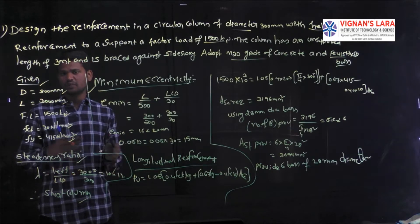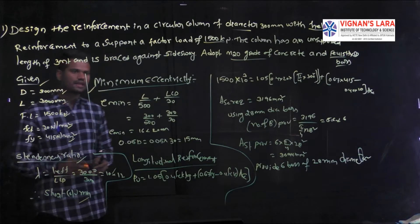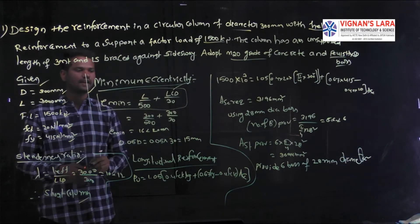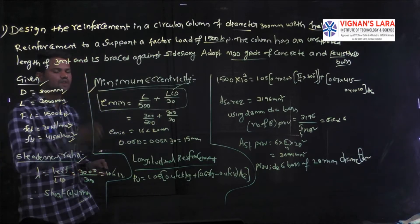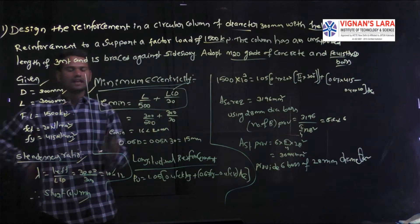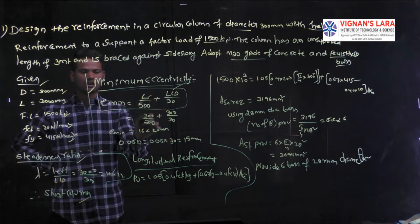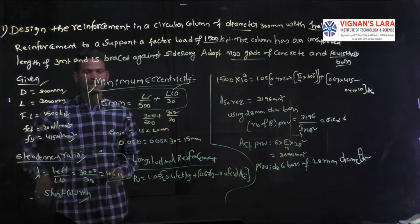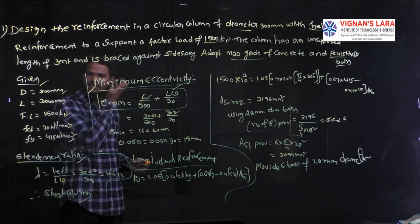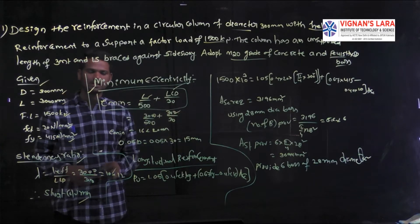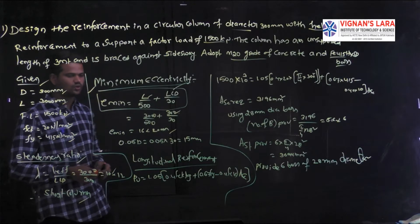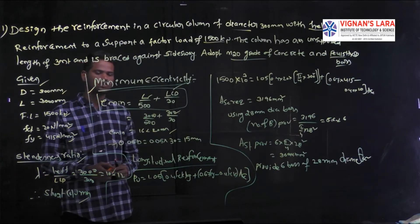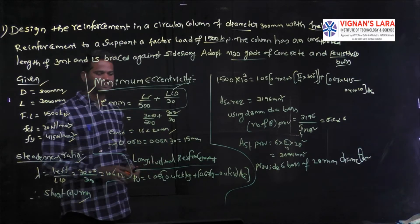Step 2: Calculate the minimum eccentricity. The formula from IS 456:2000 is: e_min = unsupported length / 500 + least lateral dimension / 30. Substituting: e_min = 3000/500 + 300/30 = 6 + 10 = 16 mm, which is less than 20 mm. We also check 0.05 times D: 0.05 × 300 = 15 mm. Since e_min is less than 0.05D, we proceed to design the longitudinal reinforcement.